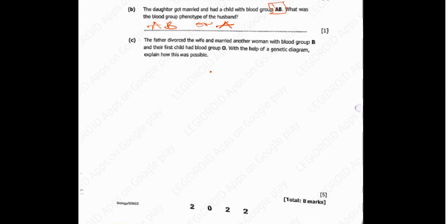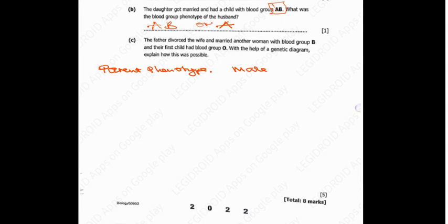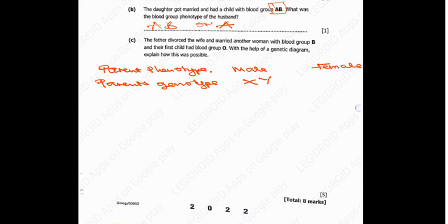So the first thing you're supposed to draw on top is the parents' phenotype. Write parents' phenotype in full, and then put here male and here female. Then you go to parents' genotype. The male genotype is BO, and for the female it is BO as well, since she also has blood group B with a recessive O.